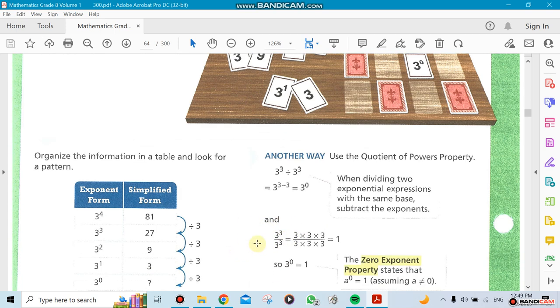If I want to prove it to you, look at 3 to the power 3 over 3 to the power 3. You have 3 times 3 times 3, and the same thing on the bottom is going to be 3 times 3 times 3. They're going to cancel each other. The answer is 1.